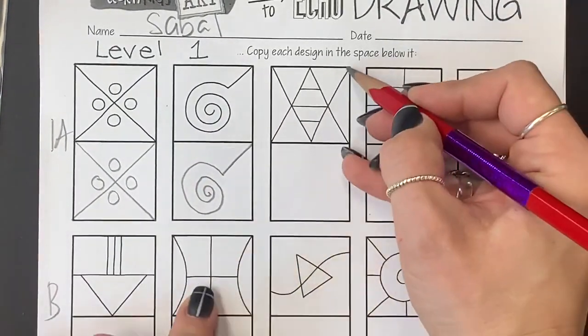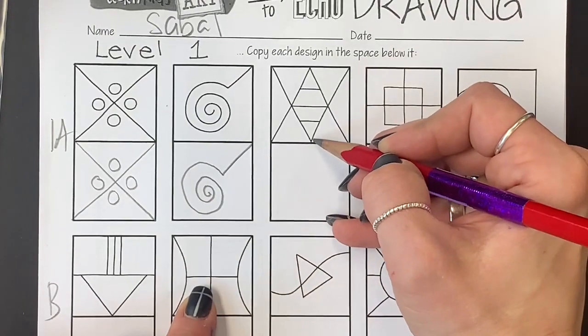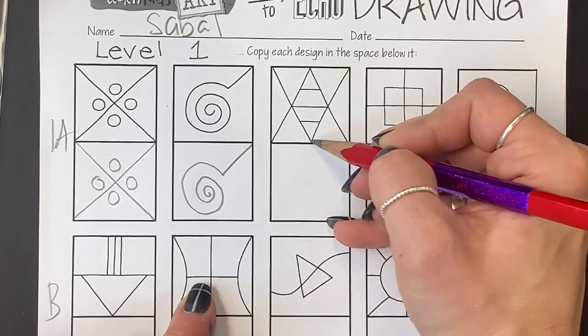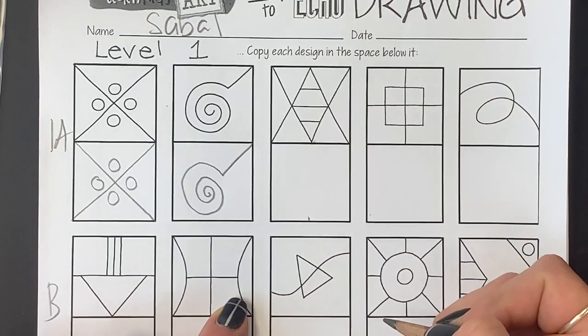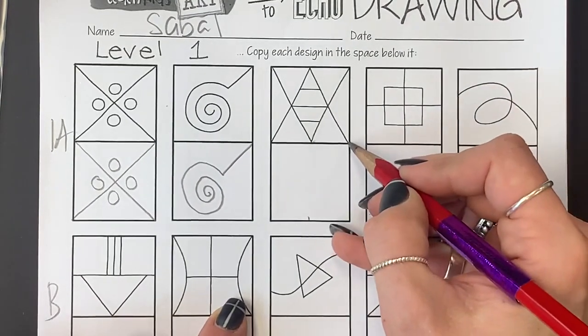Now, I'm looking at corners. Corner, does it go to another corner? No, it goes to the middle of the bottom. So, I'm going to mark a line in the middle of the bottom and I'm going to draw that line.